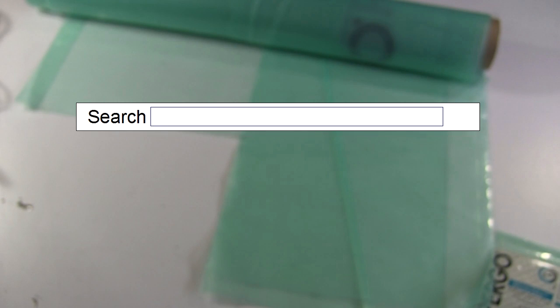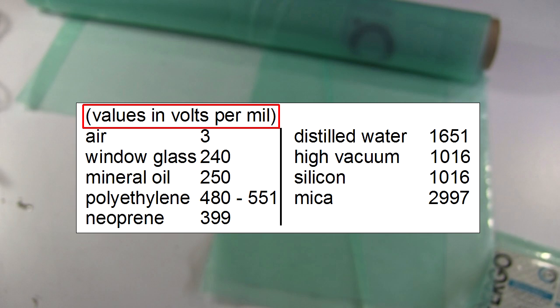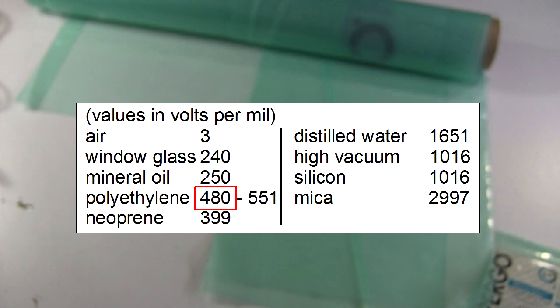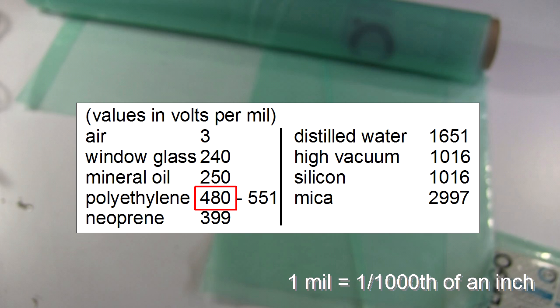The first thing you have to do is search online for the breakdown voltage, or dielectric strength, of the material you're planning on using. It'll give some value, like so many volts per thickness. Often you'll find a range. For example, 480 volts per mil to 551 volts per mil. Pick the lowest one to be safe. One mil is one thousandth of an inch.